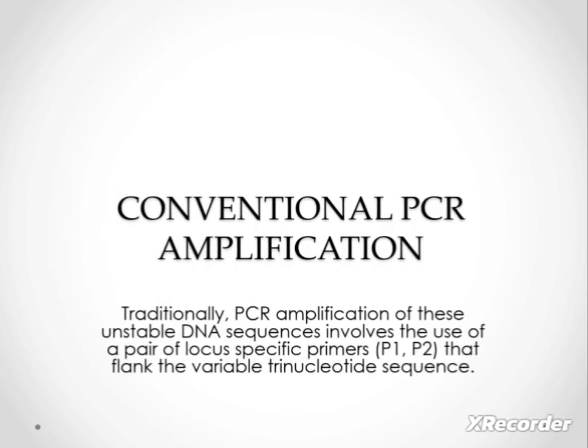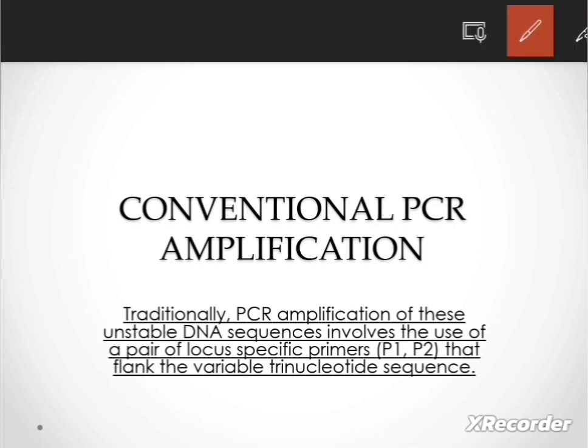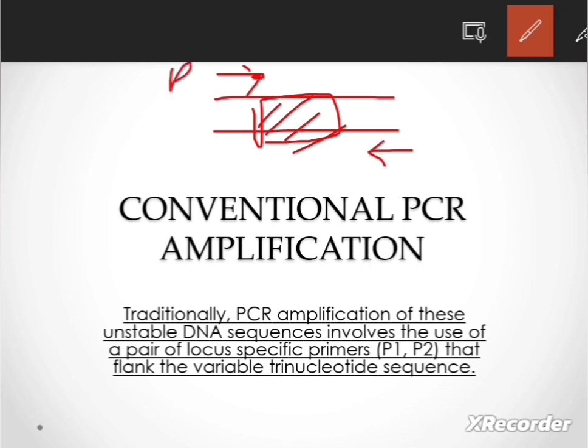PCR stands for polymerase chain reaction. In conventional PCR, amplification of these unstable DNA sequences involves the use of a pair of locus-specific primers, P1 and P2, that flank the variable trinucleotide sequence. P1 and P2 are designed in such a way that they bind to the target sequence.